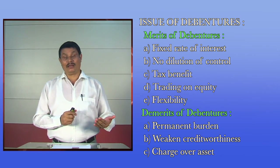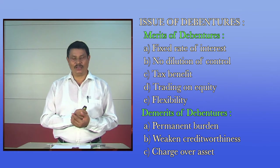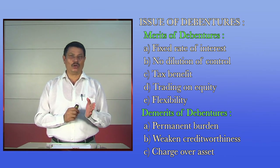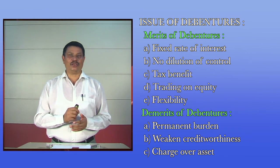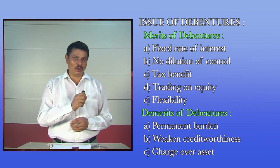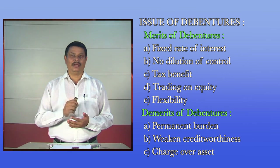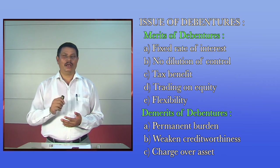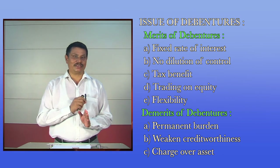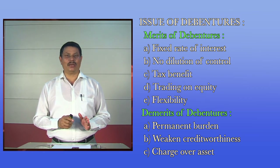Another important source of long-term business finance is the issue of debentures. Issue of debentures is another important source of obtaining fixed or long-term capital by a joint stock company. Debentures are the uniform parts of a loan raised by the company. A debenture holder is a creditor of the company. A fixed rate of interest is paid on debentures. The interest on debentures is charged to the profit and loss account of the company. Debenture holders are not the owners of the company.